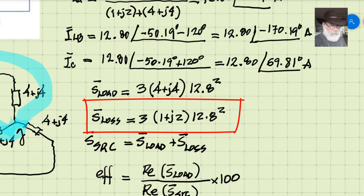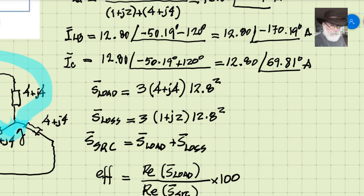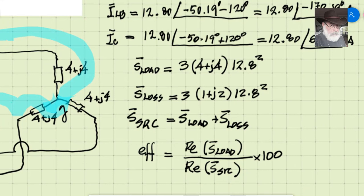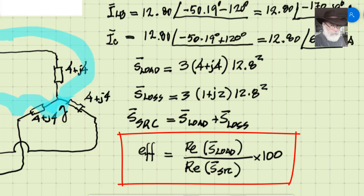The power losses in the transmission system are the impedance 1+j2 multiplied by the square of the RMS line current, times three for the three cables. The power of the source is then the sum of load power plus cable losses. The efficiency is the real part of the load's complex power divided by the real part of the source's complex power, multiplied by 100.